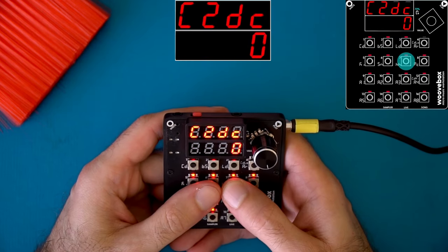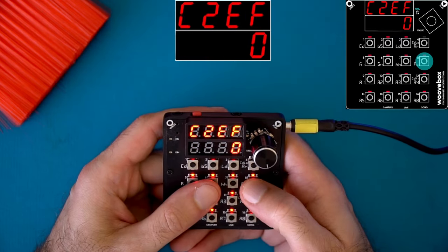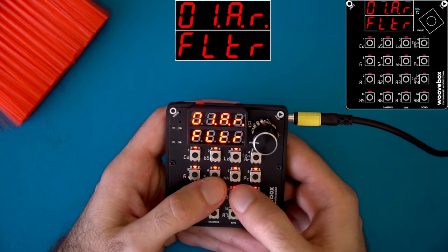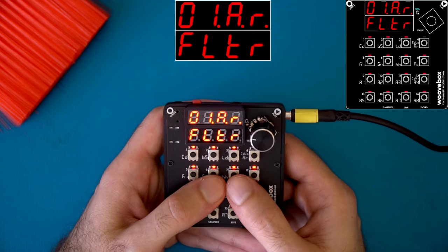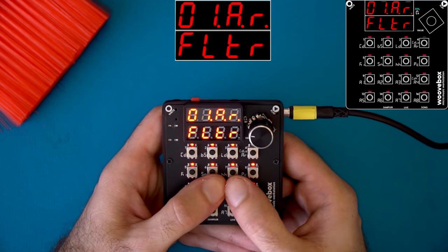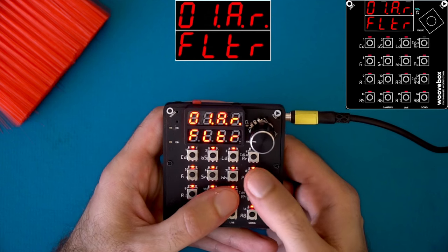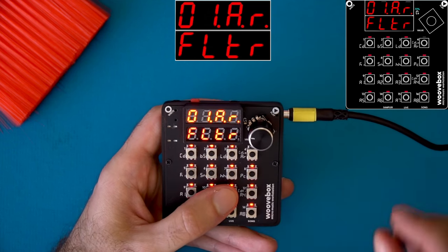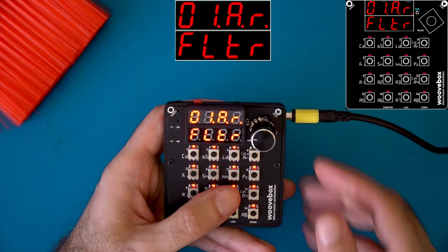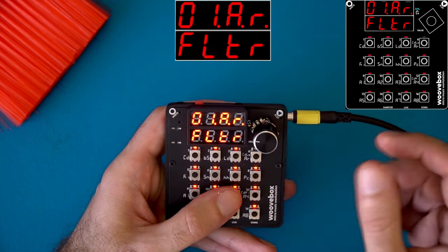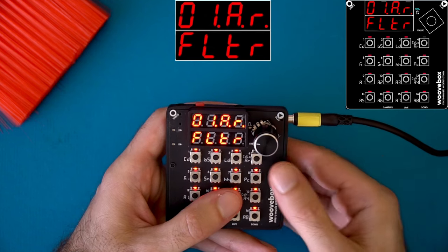So the next two parameters are cutoff to decay and cutoff to effect. The first one, cutoff to decay on key seven, will shorten all of the amplitude envelopes as you close the filter. And as you open the filter, it will open them. The next one, cutoff to effect on key eight, will open the sends for reverb and delay when you open the filter and close those sends when you close the filter.